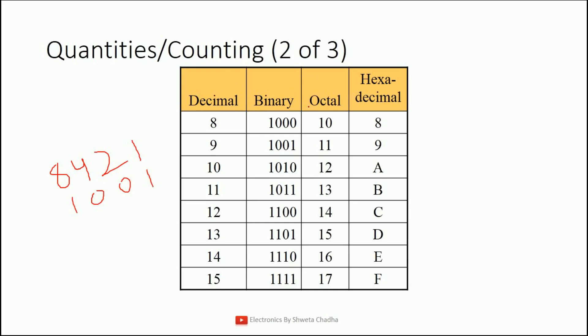But what about the octal number system? We finished till 7, and as I already informed you, in the octal number system 8 and 9 are not allowed. That is why after 7, we write directly 10. So 10, 11, 12, 13, 14, 15, 16, 17 are allowed. After 17, 18 is not allowed because 8 is not allowed, and 19 is also not allowed because 9 is not allowed. Hence, after 17, you write directly 20.